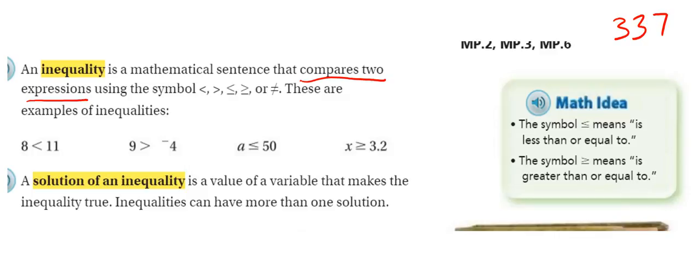these different signs. These are some examples, and we would read this from left to right. 8 is less than 11. 9 is greater than negative 4.